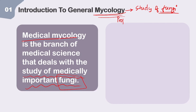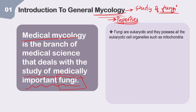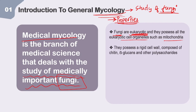The first property is that fungi are eukaryotic and they possess all eukaryotic cell organelles such as mitochondria. Since they are eukaryotic, they will have all the typical eukaryotic organelles.